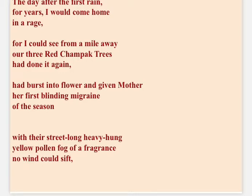The poet says that for a number of years, during every first rain, he finds his mother suffering from a blinding migraine — that means an unbearable headache — because of three red champak trees. During the summer season, the red champak trees bloom, releasing yellow pollen grains in the air which spread like clouds throughout the street. The pollen grains remain suspended in the air, making it thick like fog with a heavy scent that the breeze cannot blow away.